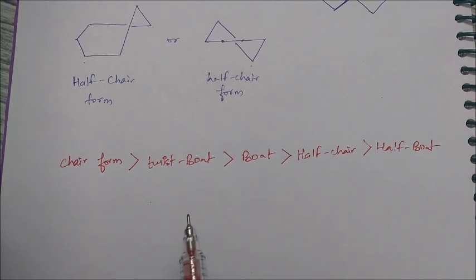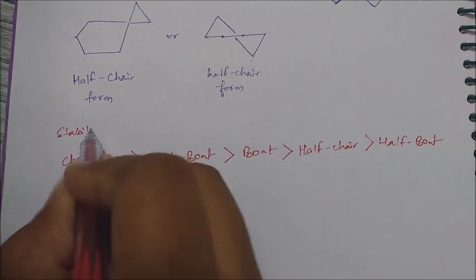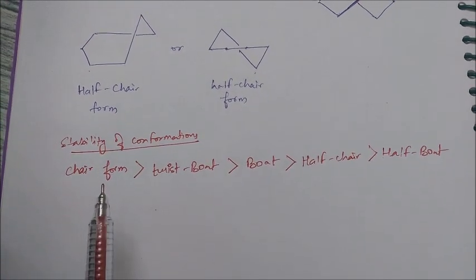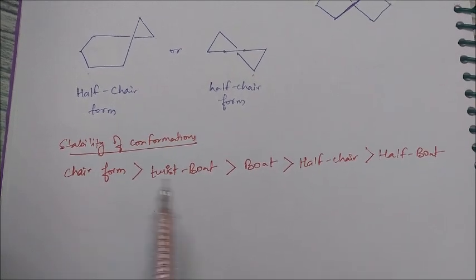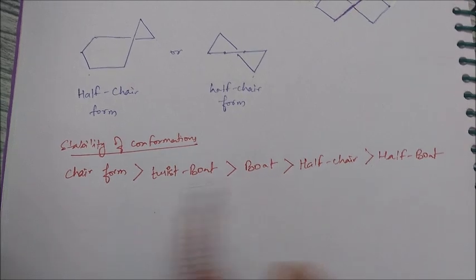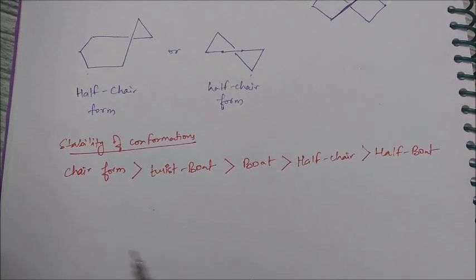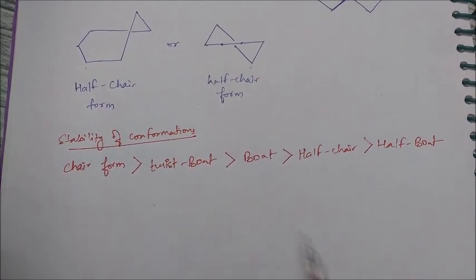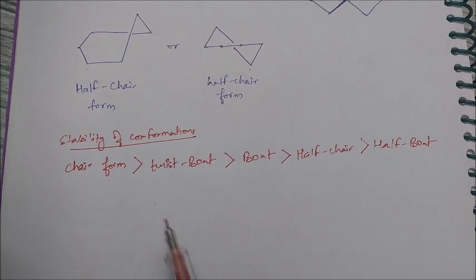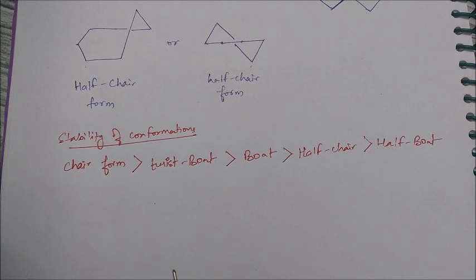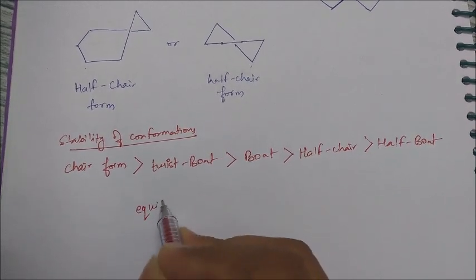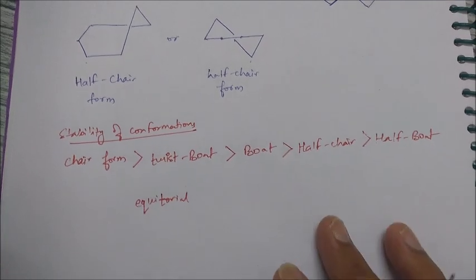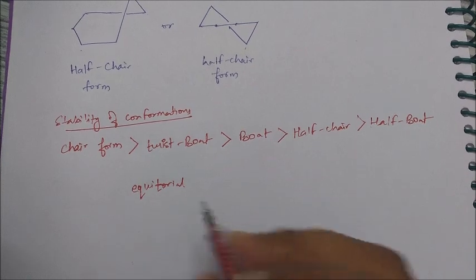This is the stability order of different conformations of cyclohexane — this is what you should learn and keep in mind. Once you draw the potential energy graph in your copy and write all these things, you will understand which form is most stable and which is least stable. Now we move on to the stereochemistry part, where we will study equatorial and axial positions.